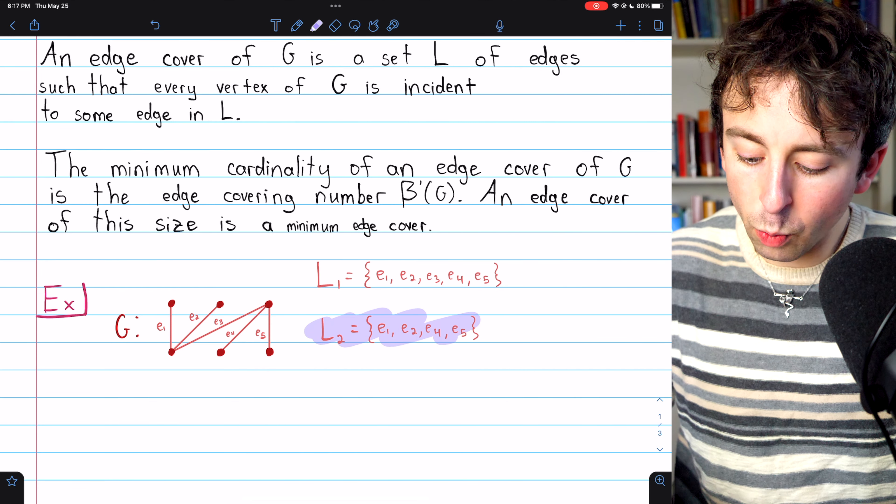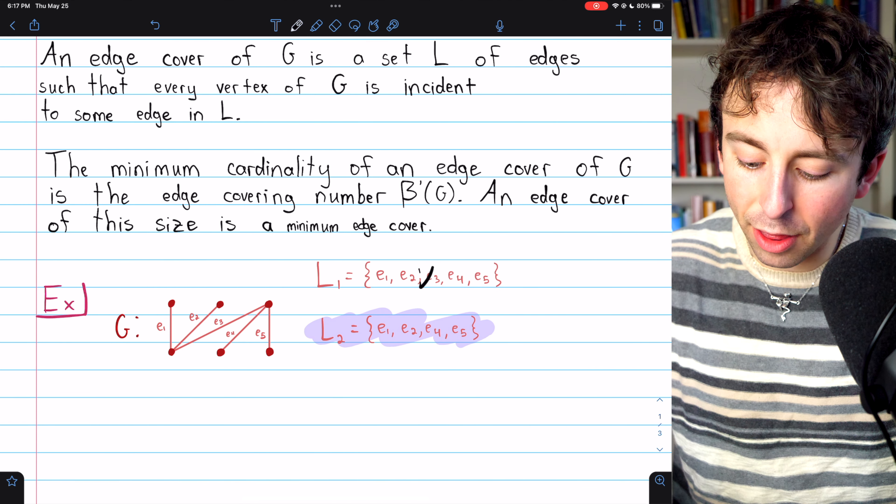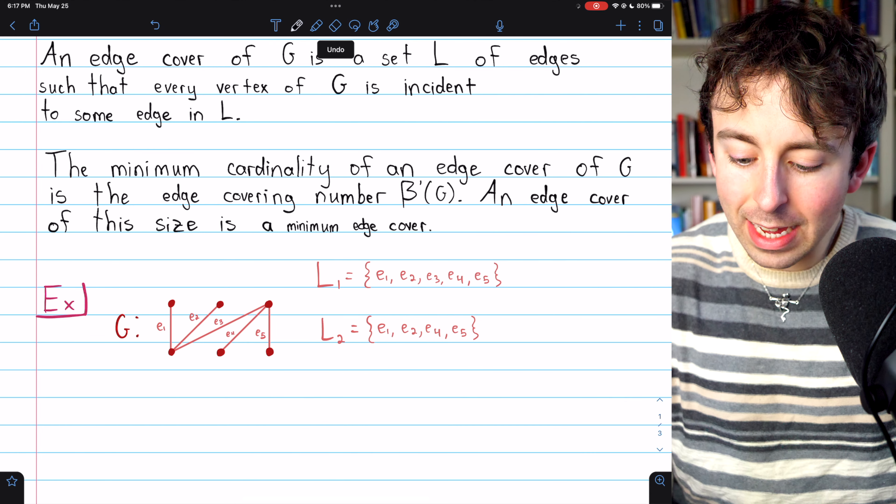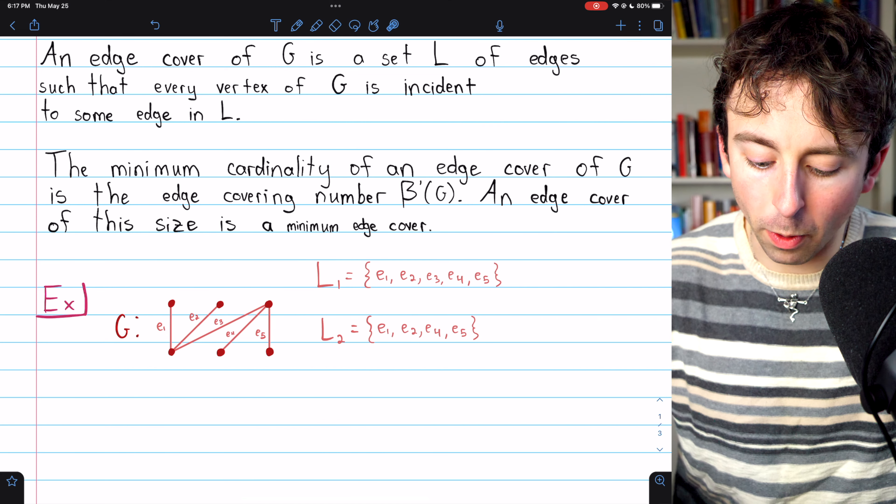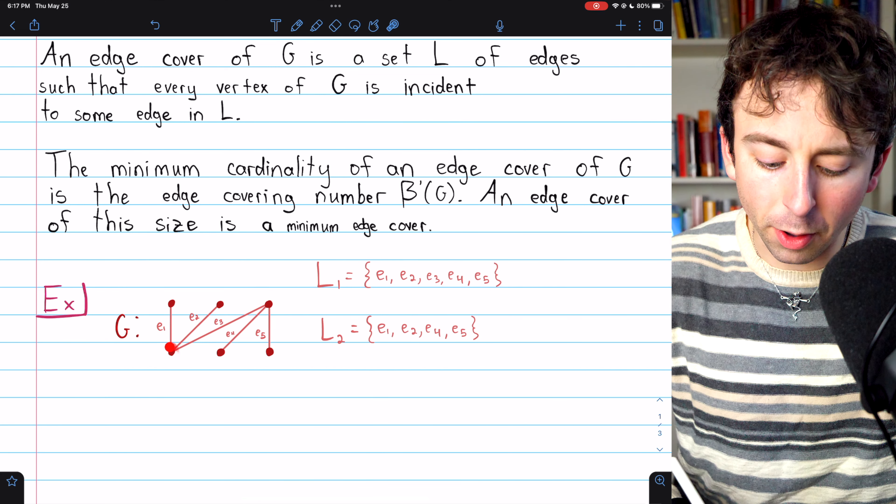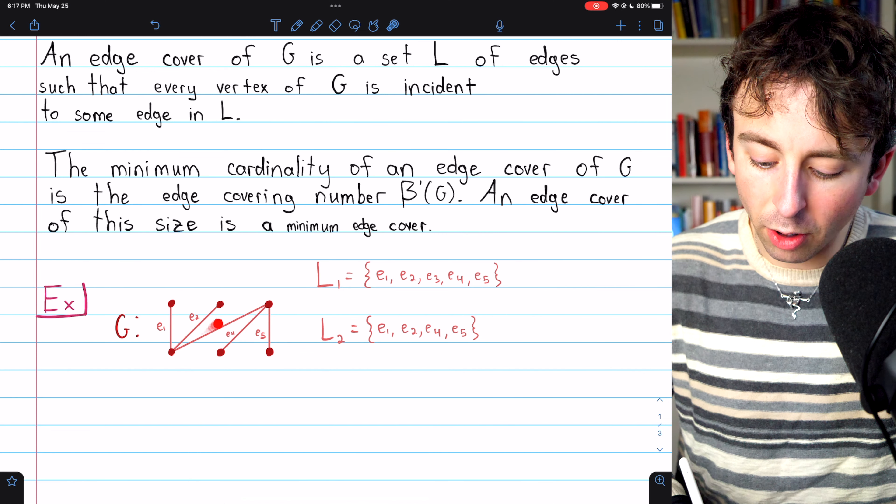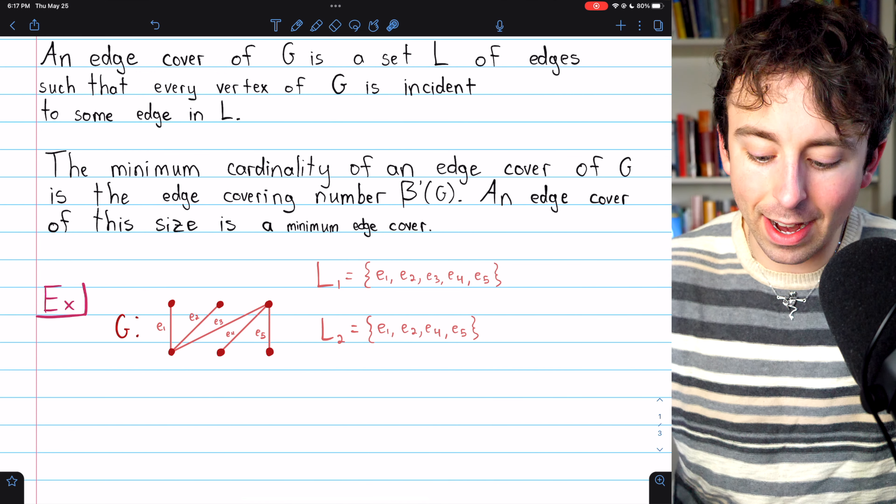Well, here's one. We don't actually need E3 to cover the graph because E3 covers this vertex, which is already covered by E4 and E5, and it covers this vertex, which is already covered by E1 and E2. So E3 here is totally unnecessary.